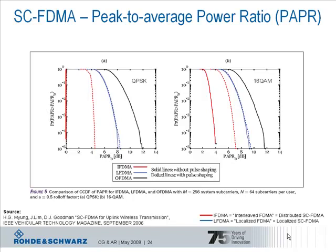As we can see, the crest factor for OFDM is constant at around 12 dB, which is comparable to WiMAX, and is independent of the modulation scheme and the filter used. For localized FDMA — the blue line, which is the mode used in LTE — the peak-to-average power ratio for QPSK modulation is around 8 dB, and therefore 3 dB lower than OFDMA. For 16QAM, the difference is just around 2 dB.